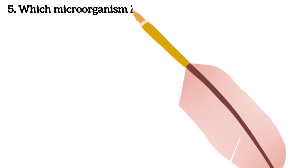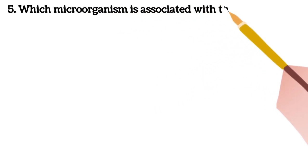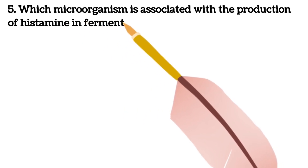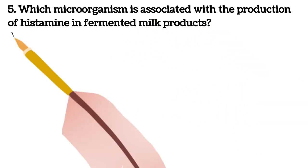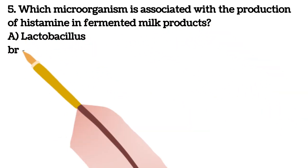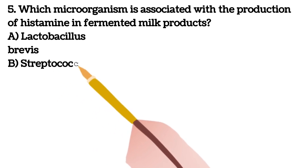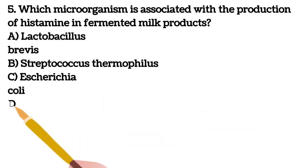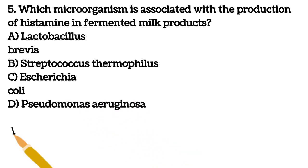Fifth question. Which microorganism is associated with the production of histamine in fermented milk products? A. Lactobacillus brevis B. Streptococcus thermophilus C. E. coli D. Pseudomonas aeruginosa. Your answer is A, Lactobacillus brevis.